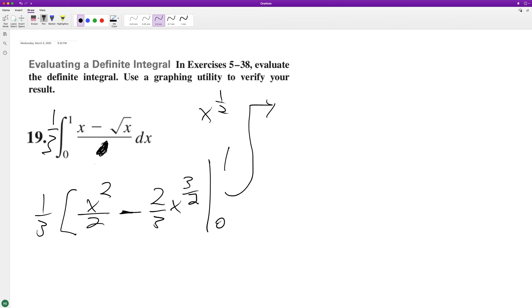So when we do that, we plug in one third, or excuse me, one, we end up with one half minus two thirds and then zero, we just end up with zero.